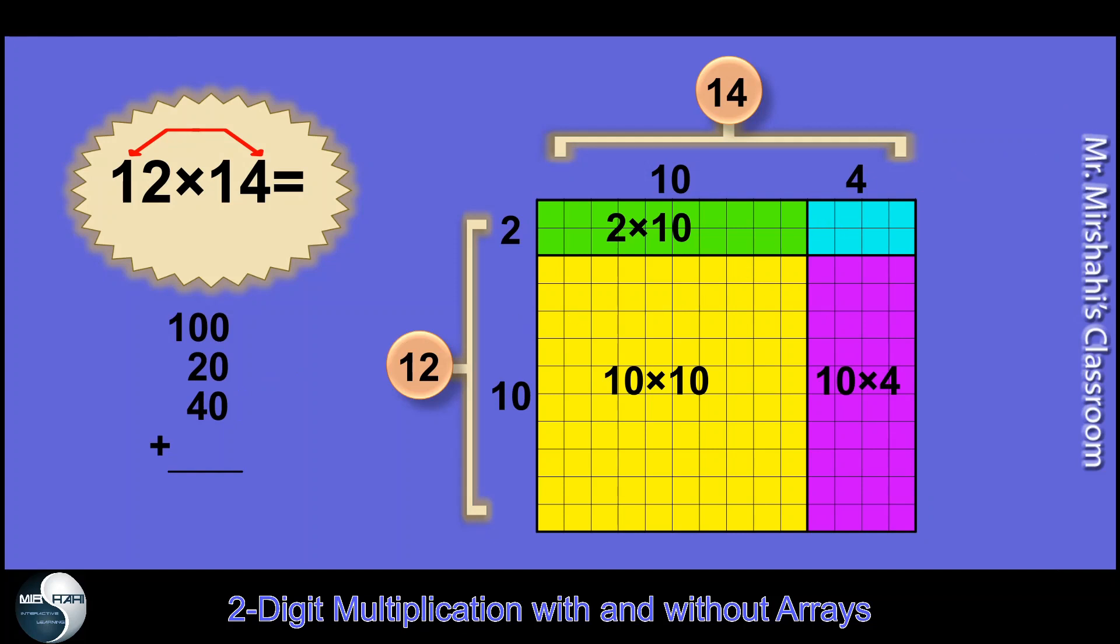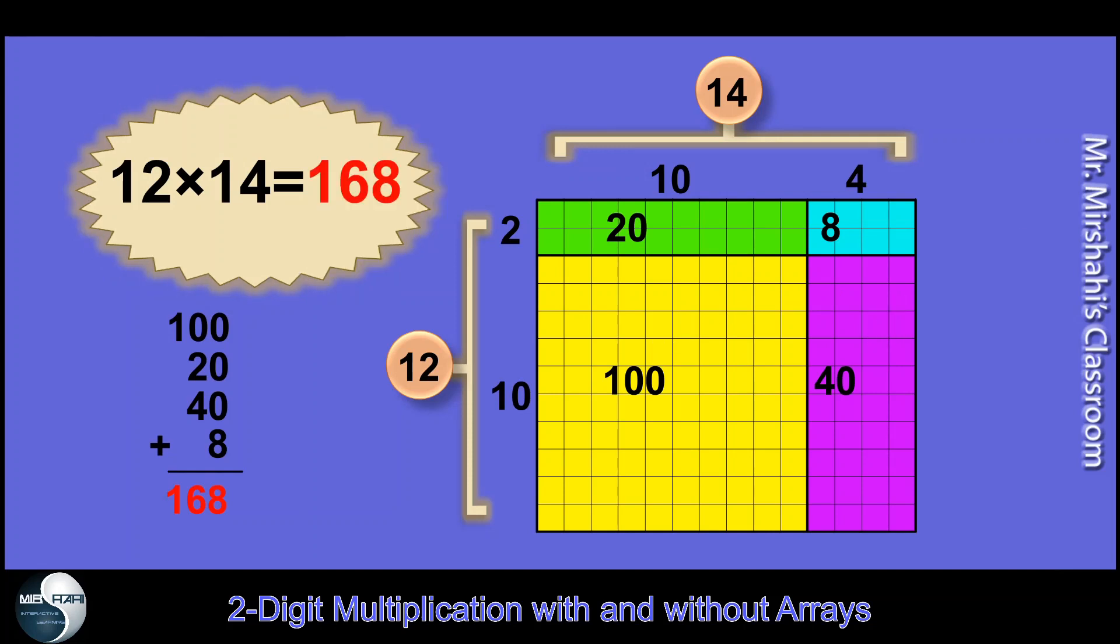And the last rectangle is the smallest one. And I get 2 times 4, and the answer is 8. When I add all these answers, I should get the area of the big rectangle. So 140, 160, 168. Now, a lot of people can do this in their head. Use the same method. But they visualize that rectangle and do the calculation in their head. They use the same technique or a variation of this technique. So here our answer is 168.